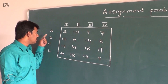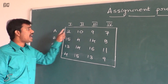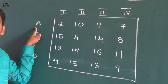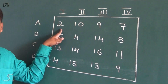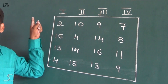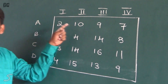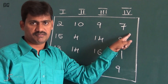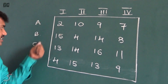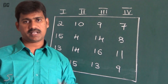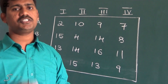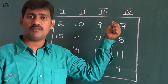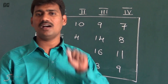This problem consists of employees A, B, C, D and we have tasks 1, 2, 3, 4. The first person can complete the first task in 2 hours, the second task in 10 hours, the third in 9 hours, and the fourth in 7 hours. In the same way, for employees A, B, C, D we have 4 tasks. First we check whether the number of employees equals the number of tasks; otherwise we introduce a dummy row or column.